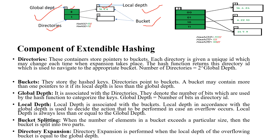The directory is a container that stores the pointer to the bucket, so bucket pointers are stored in a directory. Each directory entry is given a unique ID which may change when expansion takes place. The hash function returns a directory ID; using that you can store the element in the bucket. So previously, using the hash function you were getting the index — here you will get the directory ID, and using that ID you can store your element in the bucket.